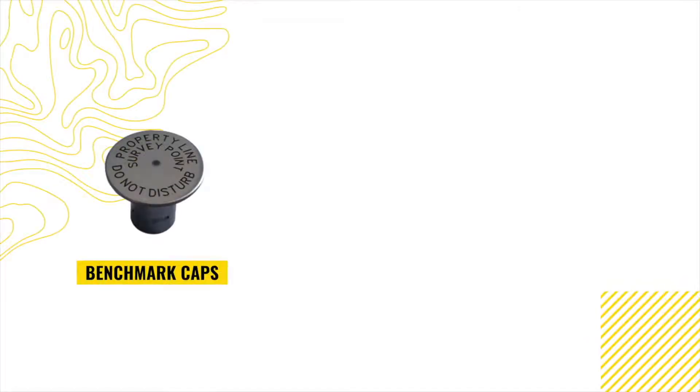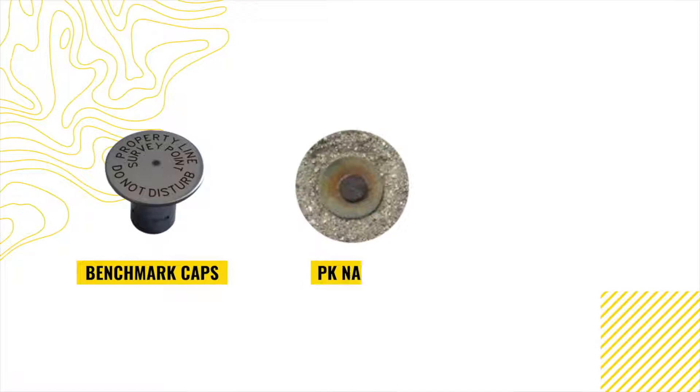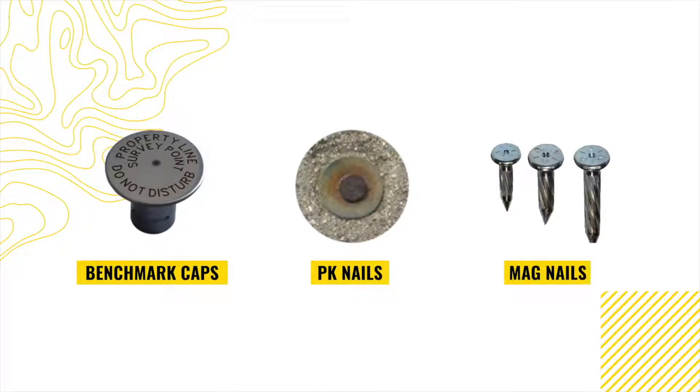Existing survey benchmarks and monuments can be used, granted they meet the criteria for ground control design. Ground control points consisting of existing monument and benchmark caps, PK nails, or mag nails can be utilized as long as the center of the marker design is easily identifiable. In addition to having a high contrast design with an easily identifiable center point, your ground control points will also need to be large enough to be distinguished in photos taken by a drone 100 meters above the ground surface.